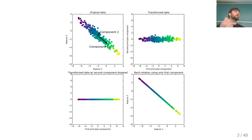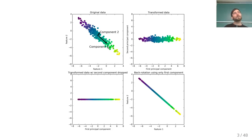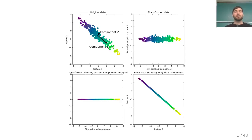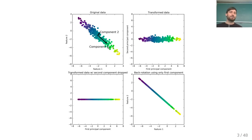If you remove the projection on the first component, anything you find afterwards will be orthogonal. That's one of the main properties of PCA — it defines directions that are orthogonal. The first component explains most of the variance in the data; the second component is orthogonal and explains most of the remaining variation, and so on.